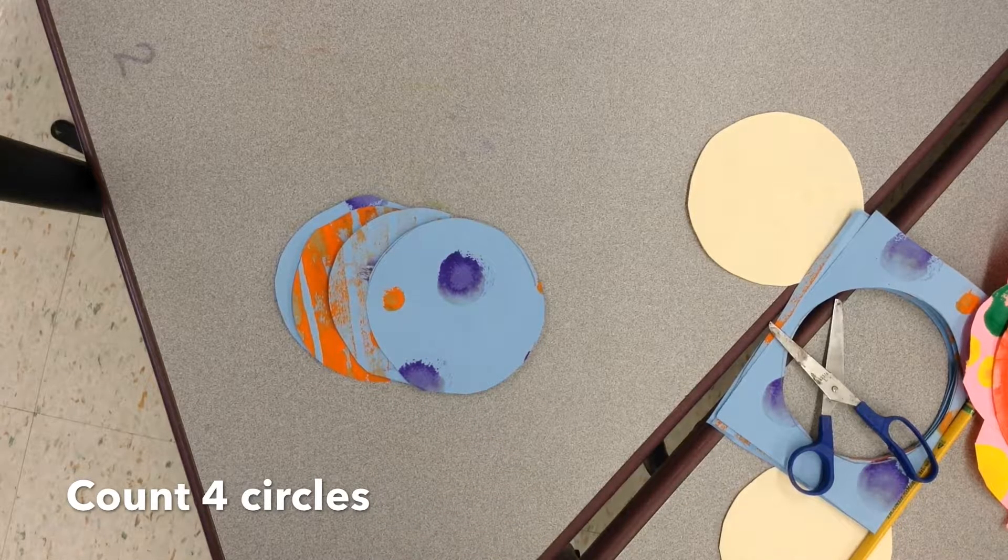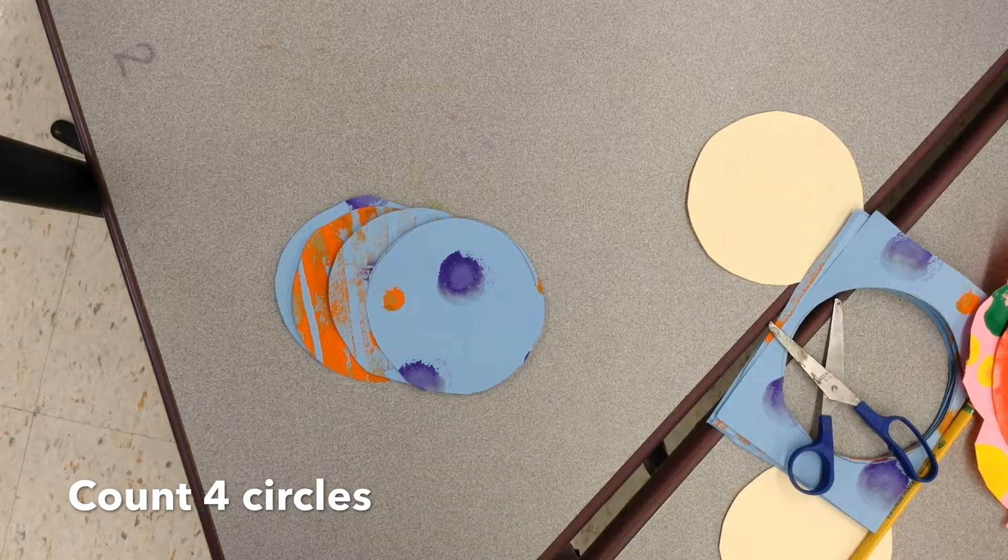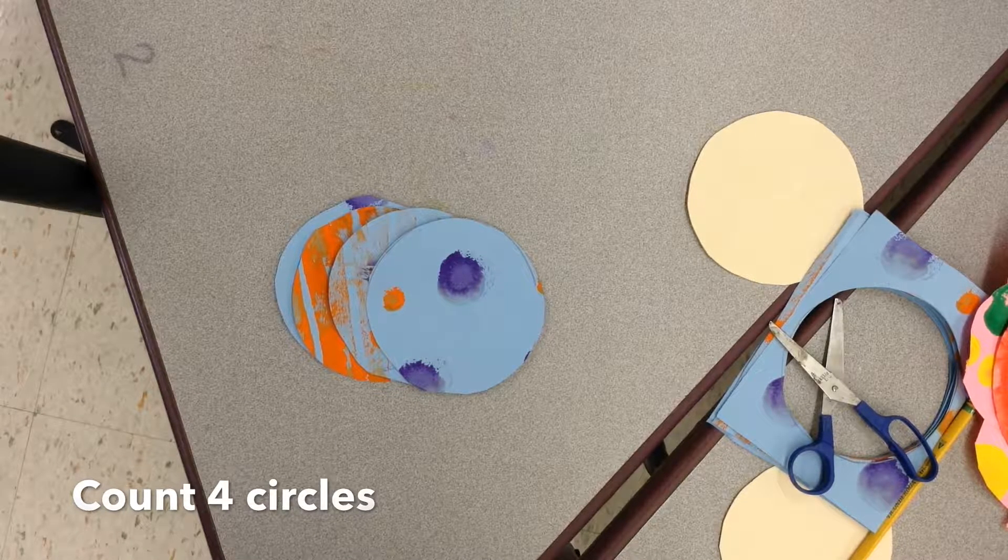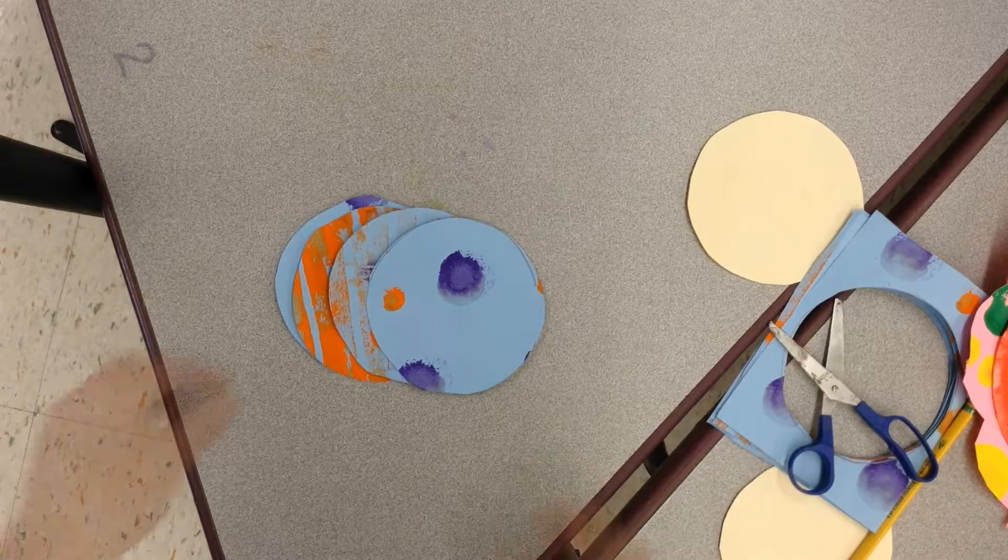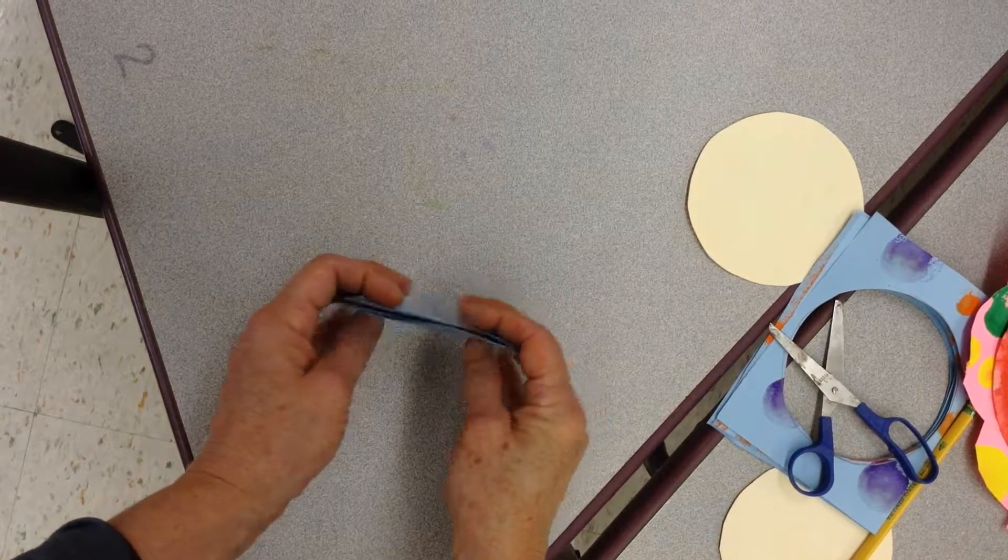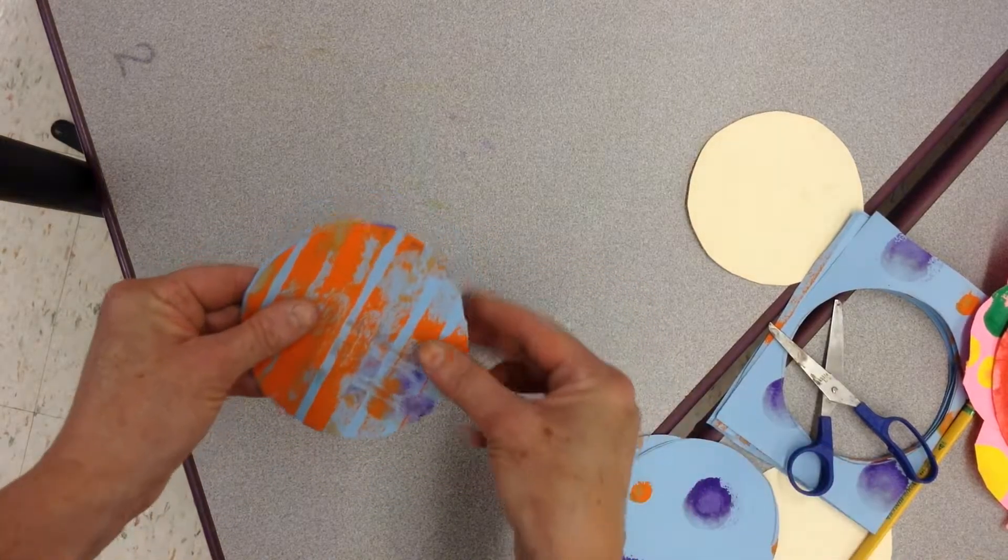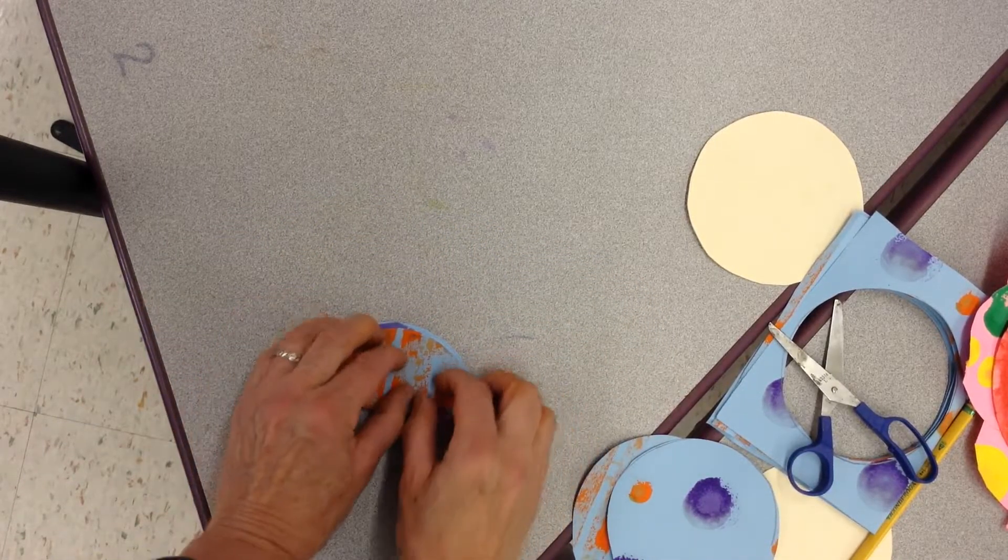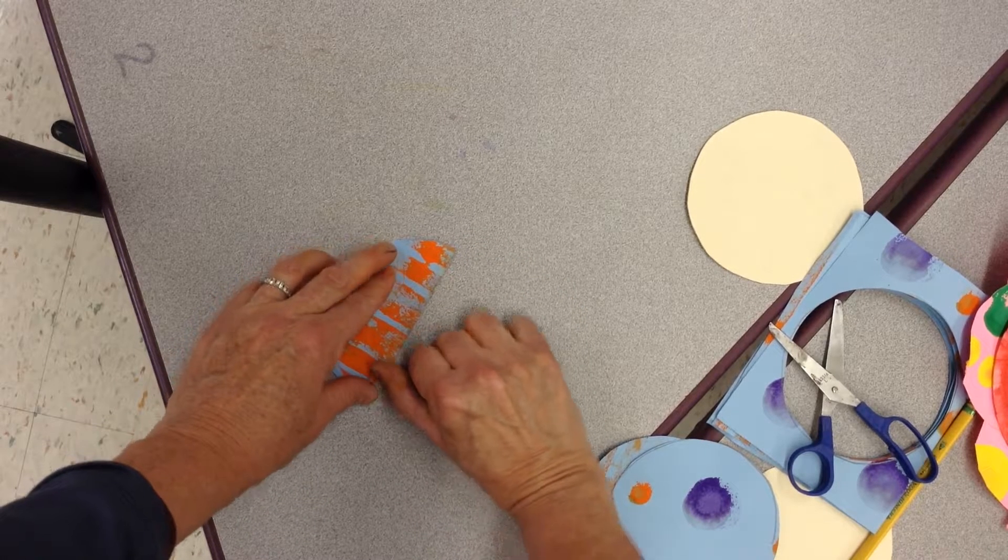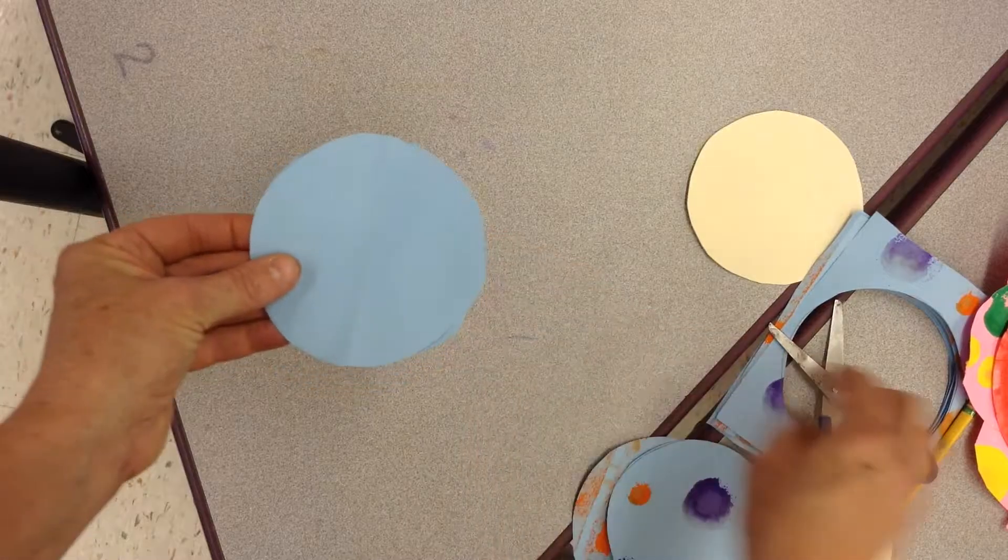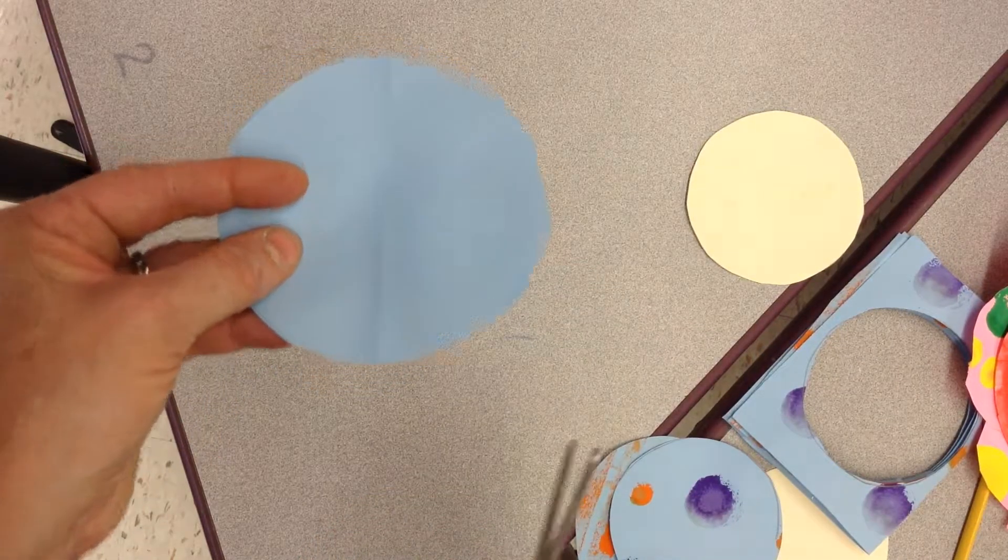How am I gonna turn four circles into eight semi-circles? Think about it. That's right, we're gonna take these, and I would do two at a time maybe. Fold them in half, open it up, and then cut on the folded line that you should see.